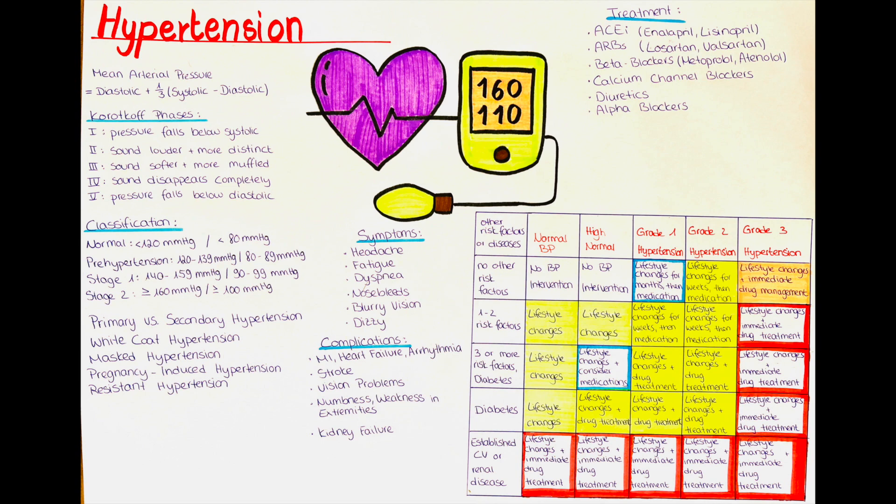Arterial hypertension, also known as high blood pressure, is a common condition that affects millions of people around the world. It occurs when the force of the blood against the walls of the arteries is consistently higher than normal. A blood pressure reading of 140 over 90 or higher is considered hypertensive.